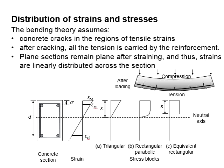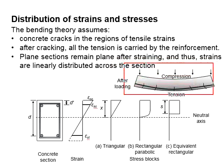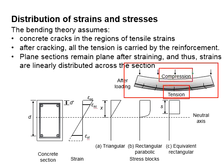Distributions of strength and stress in reinforced concrete members. This figure shows a typical response of a reinforced concrete beam subjected to a UDL load. The beam bends downwards, which leads to the bottom part of the beam undergoing tension while the top part of the beam undergoes compression.